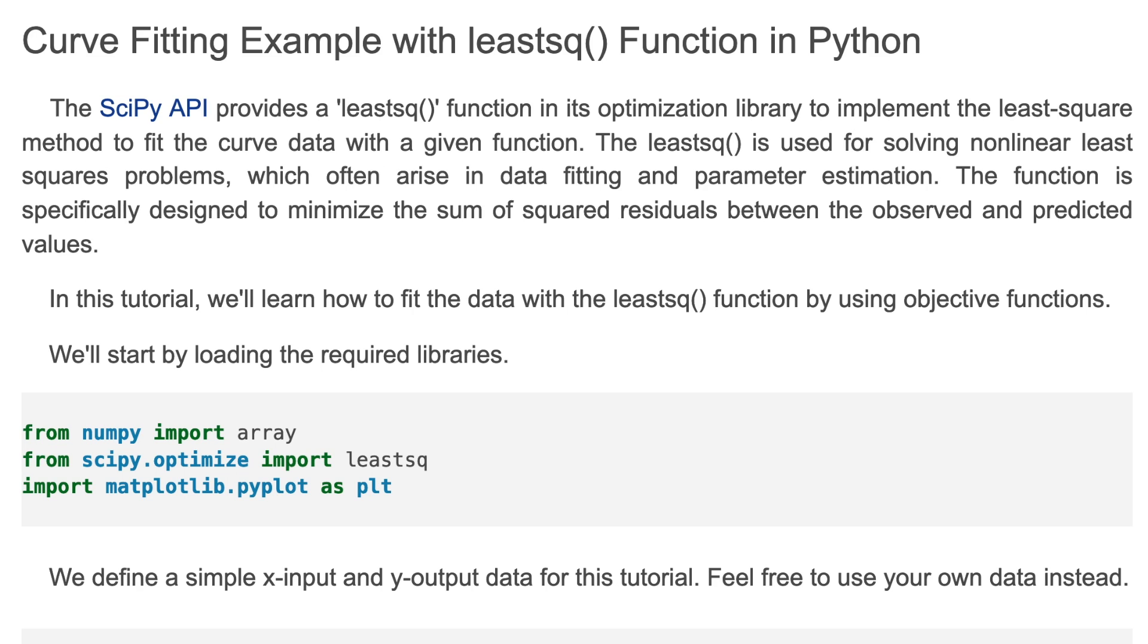The SciPy API provides a leastsq function in its optimization library to implement the least-square method to fit curve data with a given function. The leastsq is used for solving nonlinear least squares problems, which often arise in data fitting and parameter estimation.